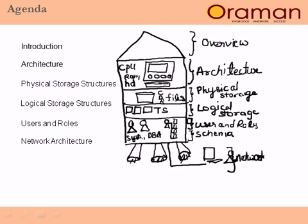The users of database objects use objects like tables, views, and programming language objects like procedures and functions. All these collections of objects for users is called a schema. Schema management will be dealt with in the schema management topic. The last topic covers the network connectivity from the Oracle server to users. Thank you.